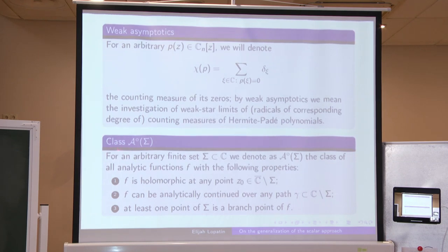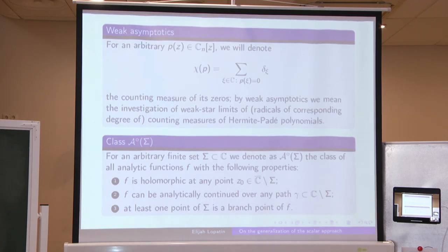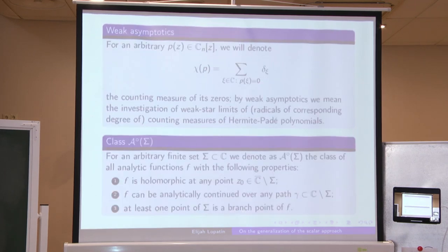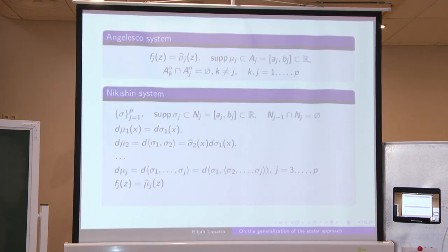For example, the class A-sigma is defined as the class of functions which can be analytically continued over any path in the complex plane, except some finite set, and such that at least one point of that set is a branch point of F.